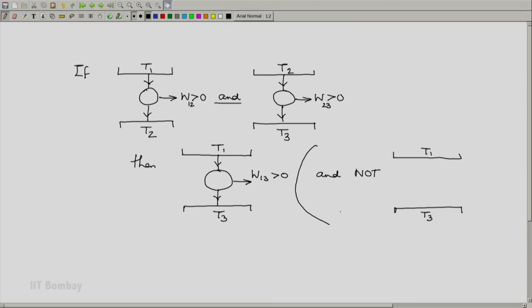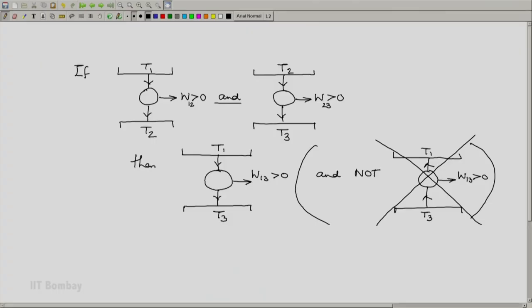This we can keep in brackets just to emphasize because this is just reiterating what is in the left part. Such a thing cannot exist. And that means now we know that if we say that T1 is higher than T2 and T2 is higher than T3, then T1 must be higher than T3. Thank you.